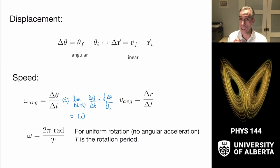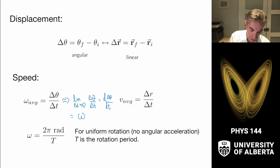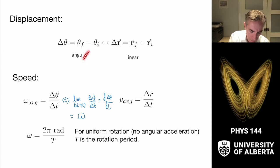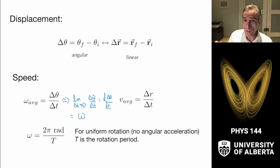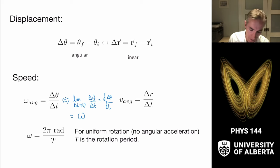Omega looks like a curly w, but it is the lowercase Greek letter omega. By analogy, the average is displacement over time. So we're building an analogy: there are linear velocities, and then there are angular velocities. We'll often engage in uniform rotation, and in that case the angular speed can be related to the period — how long it takes to go around. That is just two pi radians divided by the time to execute one complete revolution. That's a quick way to interpret the angular speed of the system.